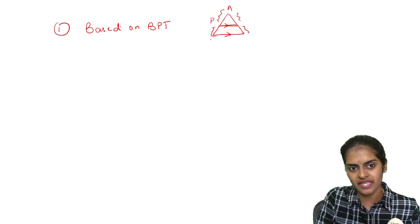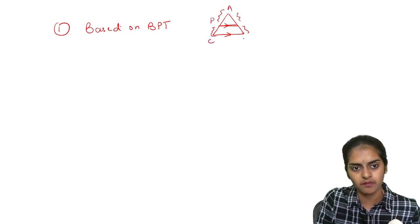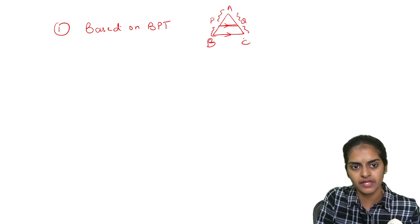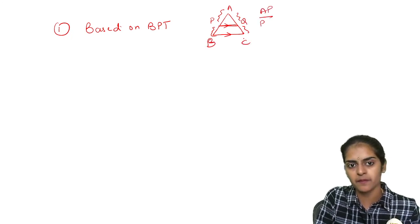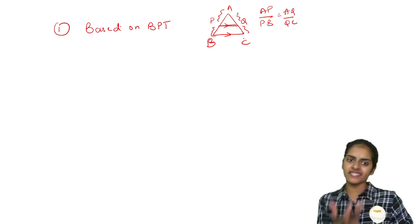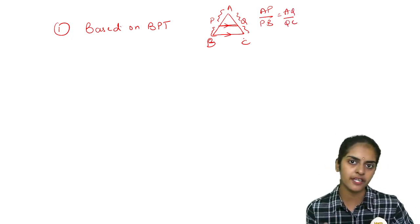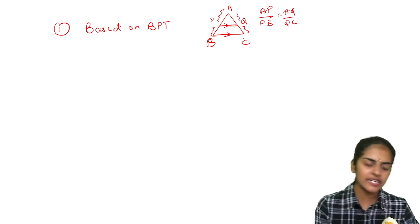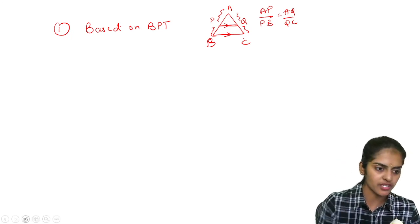So if this is triangle ABC with PQ parallel to BC, you will write AP/PB = AQ/QC. The converse is if AP/PB = AQ/QC, then PQ is parallel to BC. So based on this, you will get a question.